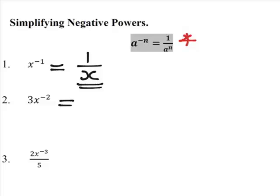The next one, you need to think of it as 3 times x to the negative 2. And using the rule above, n is 2, so it would be 1 over x squared.